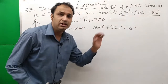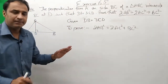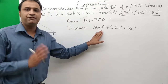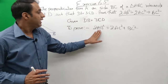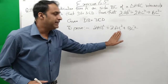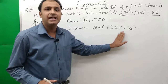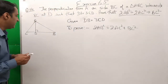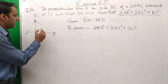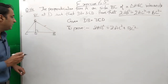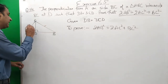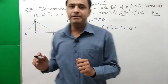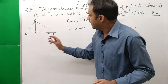Let's see the technique. We need AB², AC², and BC². So AB² and AC² — we will look at the right angle triangles in the figure. AB square we need and AC square we need.